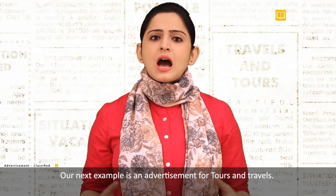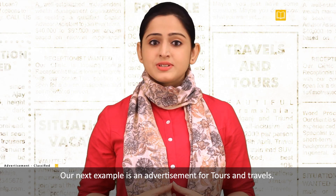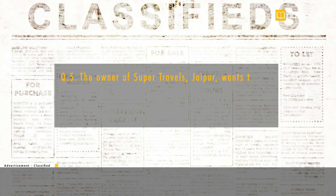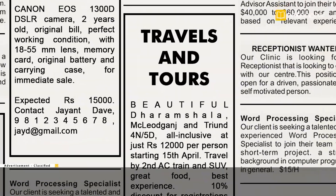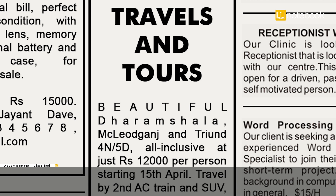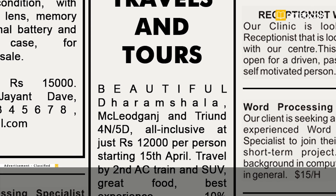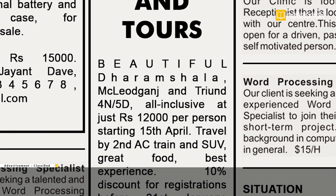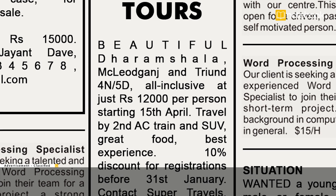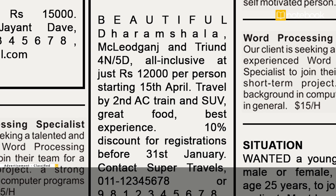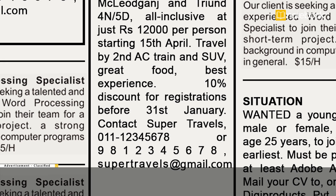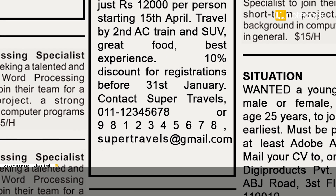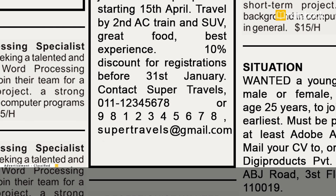Our next example is an advertisement for tours and travels. The owner of Super Travels, Jaipur, wants to advertise a Dharamshala trip for Rs. 12,000 per person. Help him write a classified advertisement. Travels and Tours: Beautiful Dharamshala, MacLeod Ganj and Triund. Four nights, five days, all inclusive at Rs. 12,000 per person starting 15th April. Travel by second AC train and SUV. Great food, best experience. 10% discount for registrations before 31st January. Contact Super Travels: 011-12345678 or 9812345678, Supertravels at gmail.com.